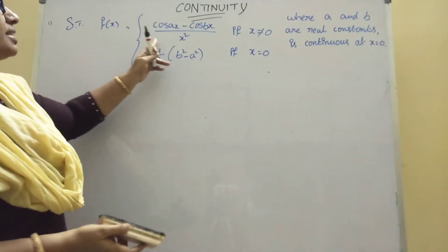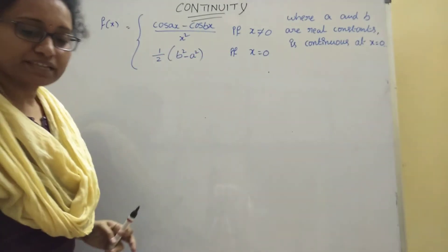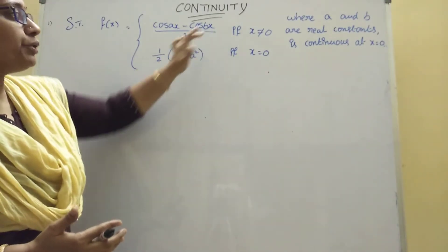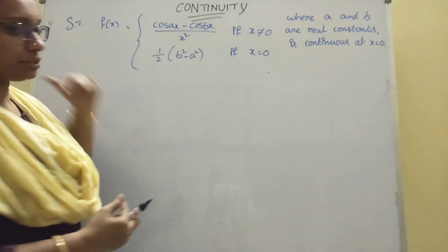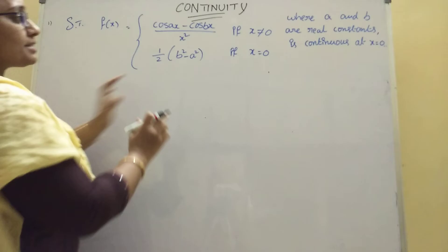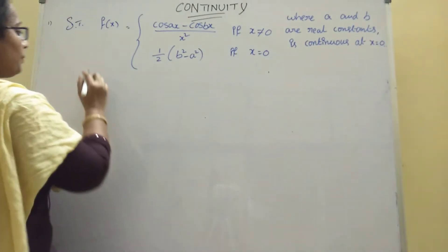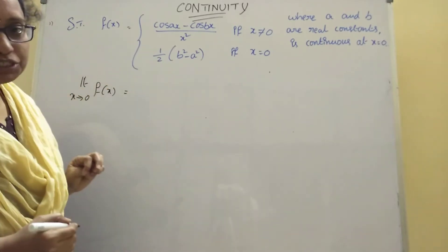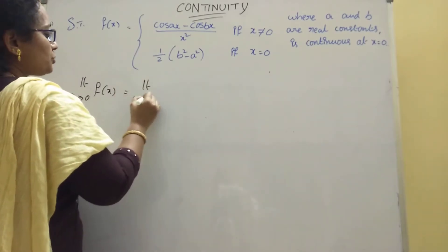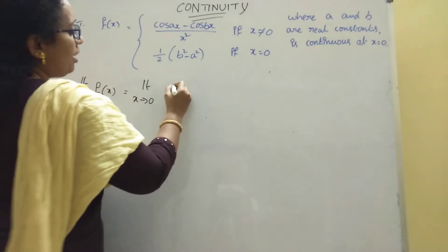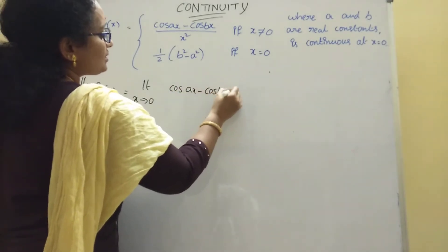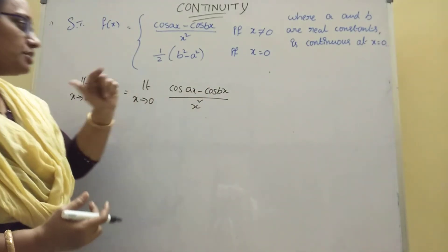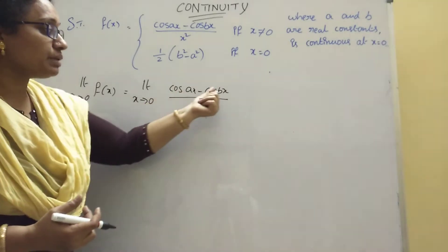f(x) = (cos ax - cos bx) / x² for x ≠ 0. I will apply 0 directly. Now, limit x tends to 0 of f(x) = limit x tends to 0 of (cos ax - cos bx) / x². Here we have cos C - cos D, so we need to apply the trigonometry transformation formula.